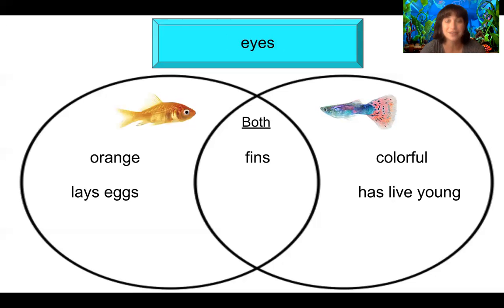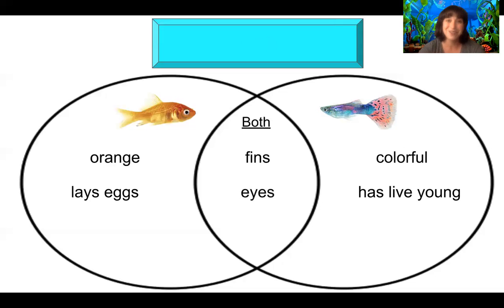Let's see the next word: eyes. Pointer power now — which one has eyes? Goldfish, guppies, or both? If you said both, you are correct. Goldfish have eyes and guppies have eyes.